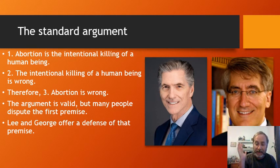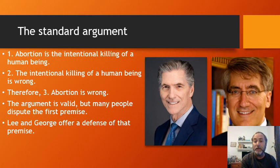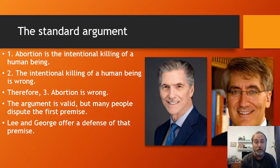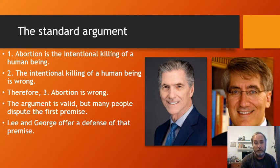They start with a pretty standard argument, and there's something to it — there is a reason so many people are vehemently opposed to abortion. The argument goes: Premise one, abortion is the intentional killing of a human being. Premise two, the intentional killing of a human being is wrong. Three, therefore, abortion is wrong. The argument is valid — if premise one and two are true, then three would follow. Premise two — murder is wrong — most would agree with. So a lot of the action here is going to be on premise one, deciding whether it's actually true.